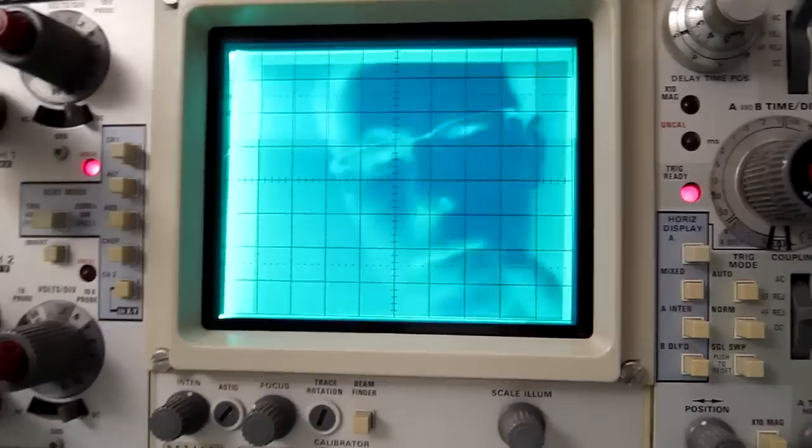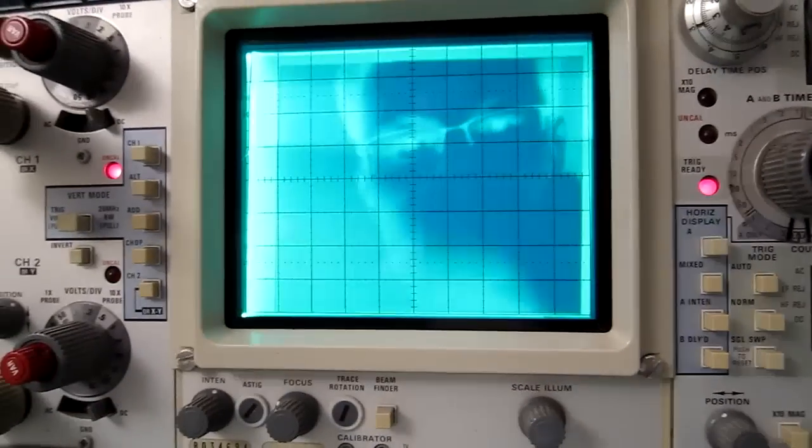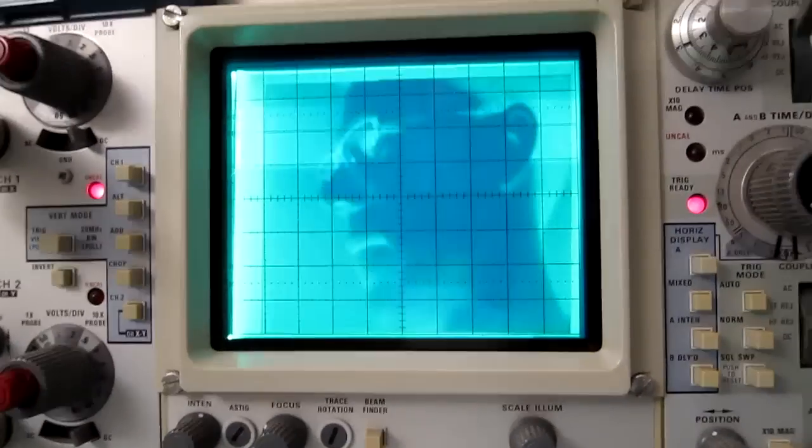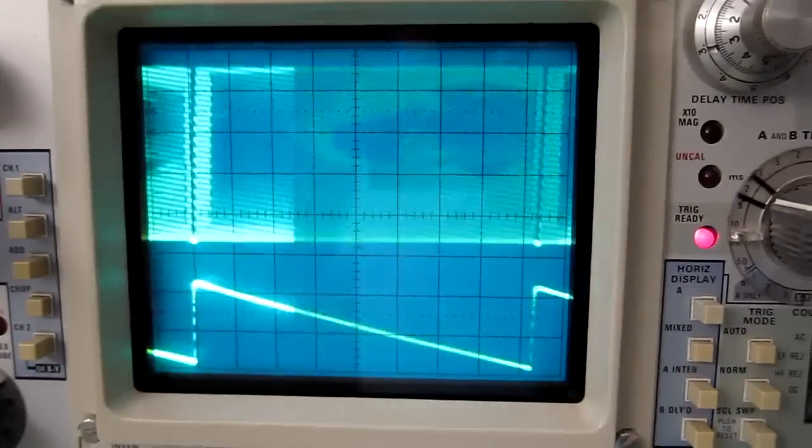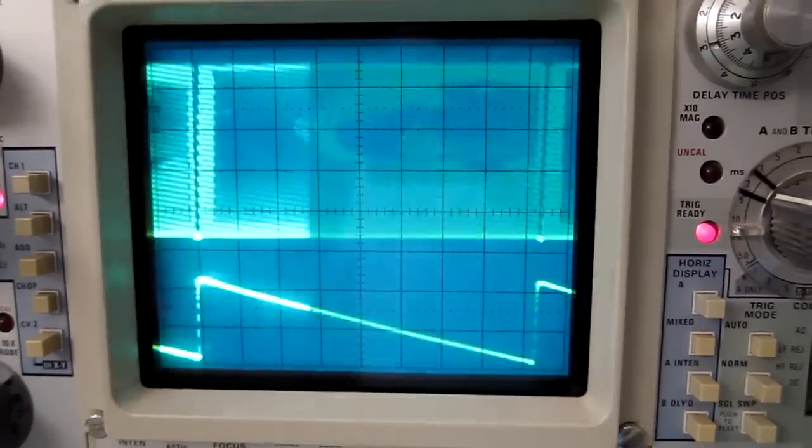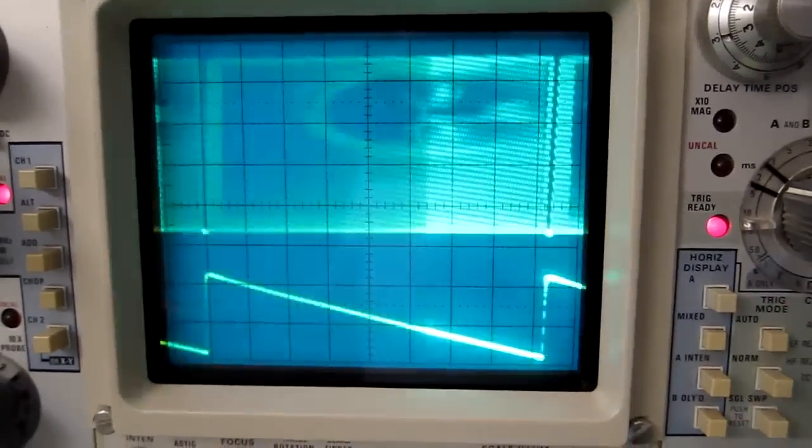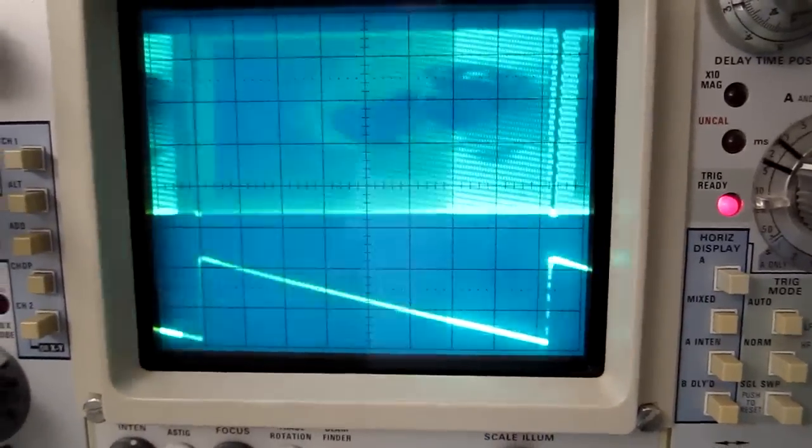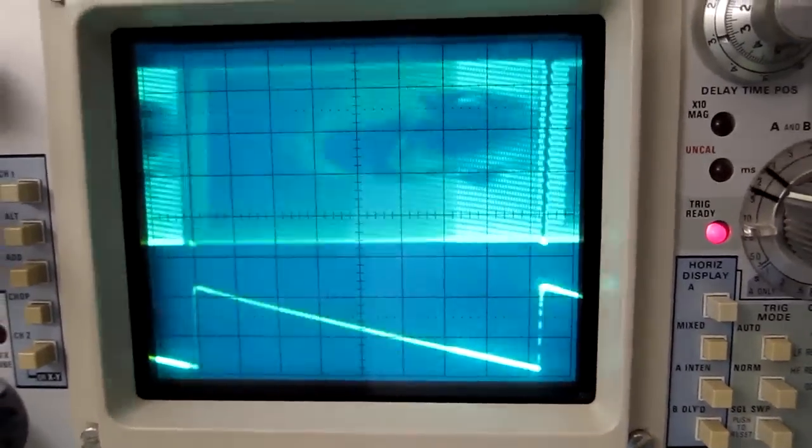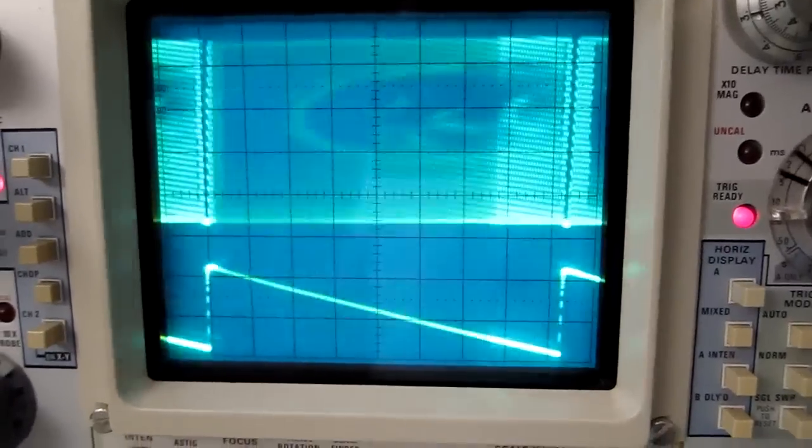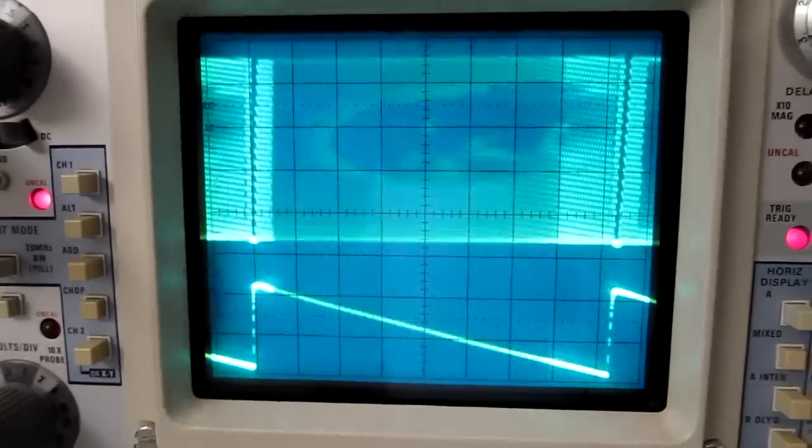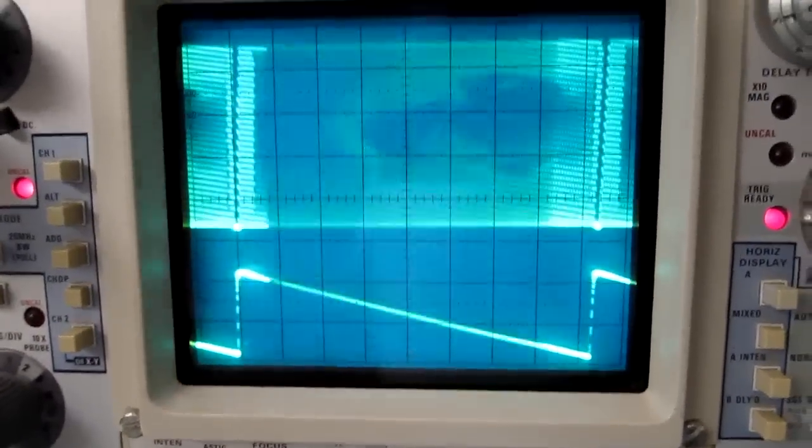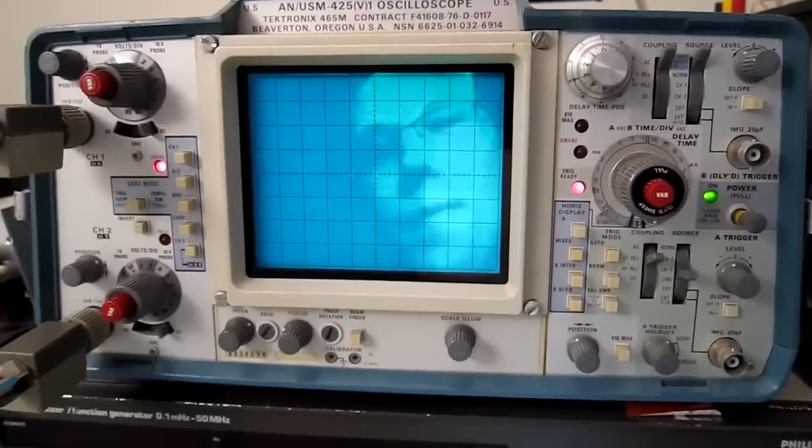Let's go back to those ramp signals again. There are two of them, there's one that controls the vertical and one that controls the horizontal. Here you can actually see what the ramps look like. The horizontal ramp happens very quickly and it smudges together. In fact since I still have the Z axis input connected, there's still video modulated on that. On the other hand, the vertical signal is much slower so you can actually see the entire ramp clearly.